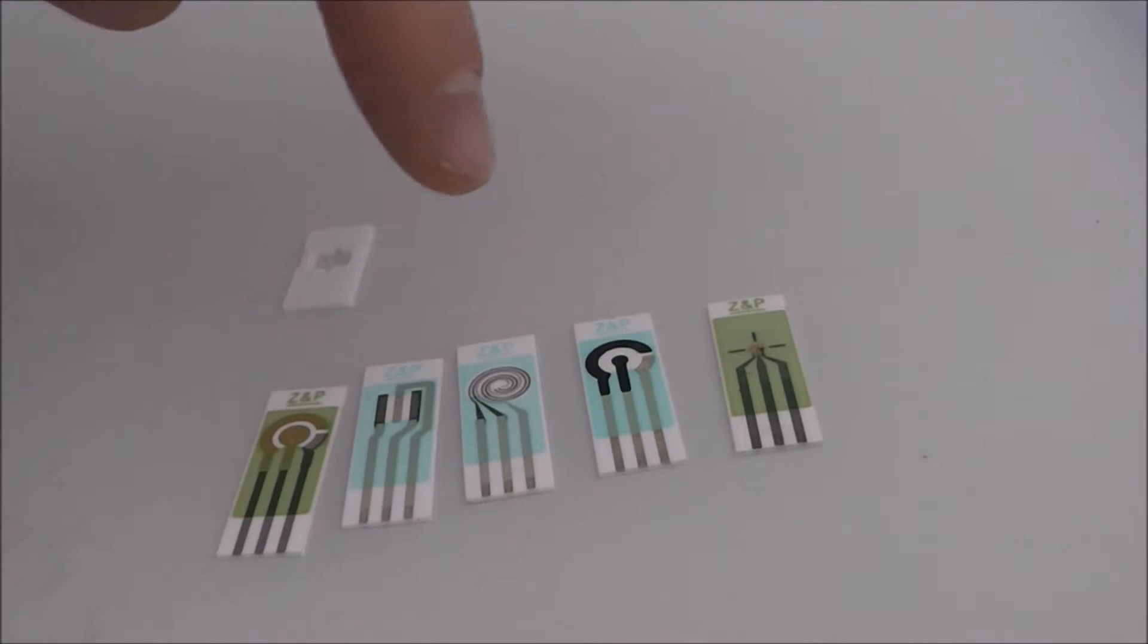So the first way we can add value is actually printing down the recognition system on there, be it an antibody, be it an ionophore, be it an enzyme. That will increase the functionality of these electrode systems by making them specific to the analyte of interest. That's the first step.